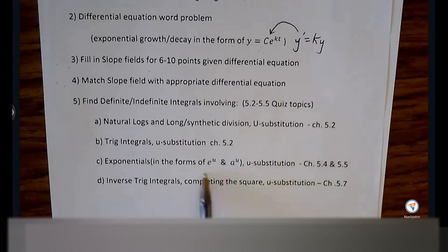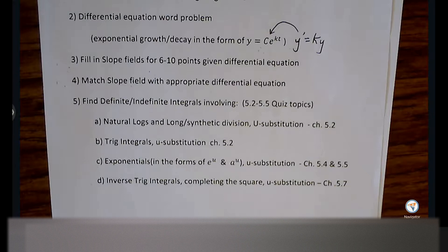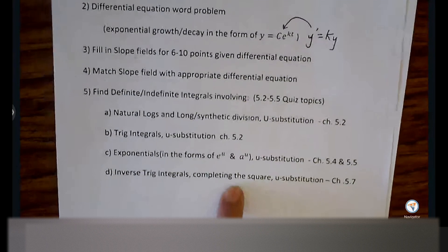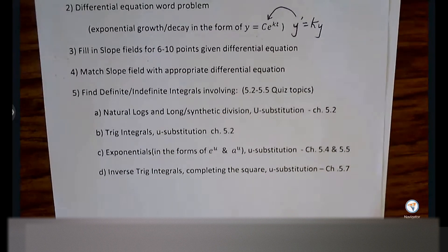Exponential functions in the form e to the u or a to the u — recognizing it, identifying the u value, matching the rule, and finding the antiderivative. The new ones involving inverse trig where we have to get the denominator showing parentheses squared so we can pull the correct A and U value. Sometimes the denominator requires us to go from standard form to vertex form, and we do that by completing the square to get that denominator expression cleaner so we can pull the information we want.